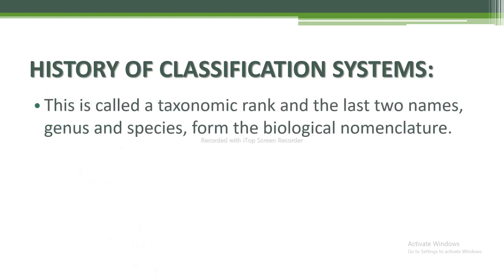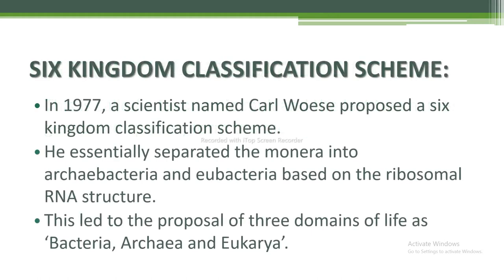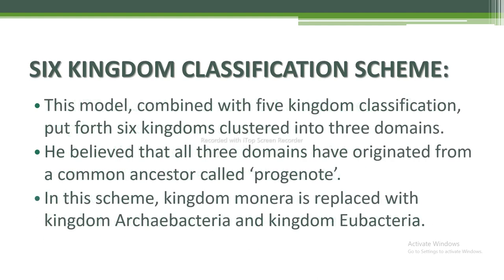This is called a taxonomic rank, and the last two names — genus and species — form the biological nomenclature. In 1977, a scientist named Carl Woese proposed a six kingdom classification scheme. He essentially separated the Monera into Archaebacteria and Eubacteria based on ribosomal RNA structure, and this led to the proposal of three domains of life: Bacteria, Archaea, and Eukarya. This model combined with the five kingdom classification put forth six kingdoms clustered into three domains.